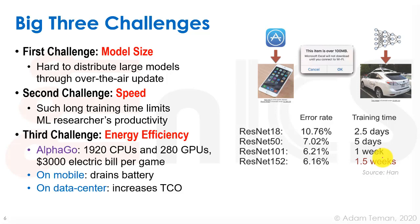The third challenge, which is not always taken into account, is energy efficiency. On the high-end side, the AlphaGo project by Google — where a machine beat the best Go players in the world — took almost 2,000 CPUs and almost 300 GPUs, meaning one game of Go cost a $3,000 electric bill. On the edge and mobile side, heavy inference drains the battery, and in data centers it increases the total cost of ownership. So the big three challenges are model size, speed, and energy efficiency.